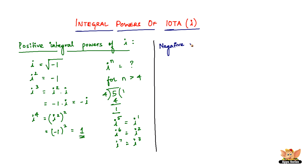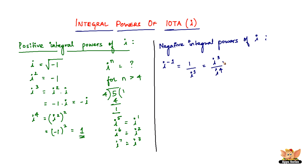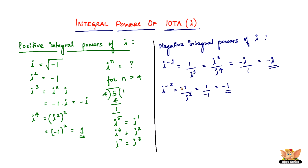Next, let us get into the negative integral powers of iota. We have I to the power of minus 1, which by the law of indices equals 1 divided by I. This can be written as I cubed divided by I to the power of 4. I cubed is negative I, and I to the power 4 is 1, so I to the power of minus 1 is negative I. Then I to the power of minus 2 equals 1 divided by I squared. Since I squared is negative 1, we have 1 divided by negative 1, which equals minus 1. So I to the power of minus 2 is minus 1.